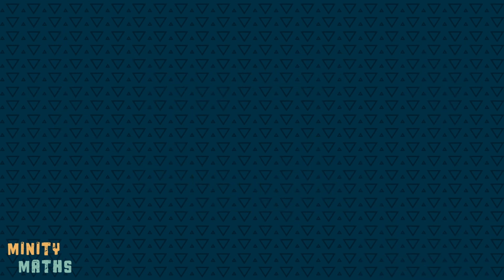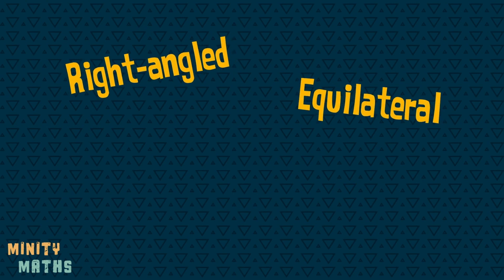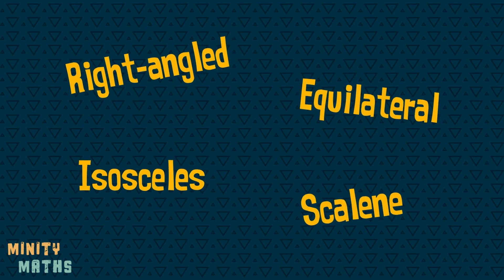Triangles are three-sided shapes. There are four types: right-angled, equilateral, isosceles, and scalene.